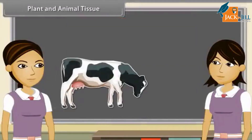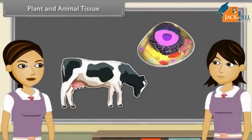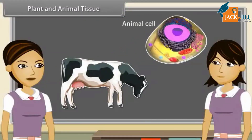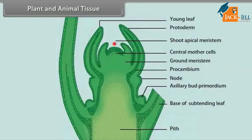Animals are heterotrophic and have to move around in search of food, mate and shelter. So they need more energy in comparison to plants. That is why most of the tissue in animals is living. One more big difference between plants and animals is pattern of growth — the growth in plants is limited to some regions. There are some tissues in plants that divide.